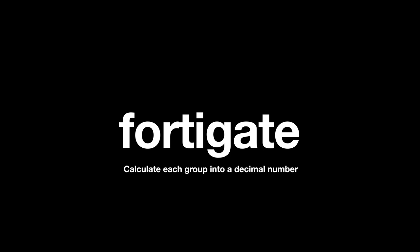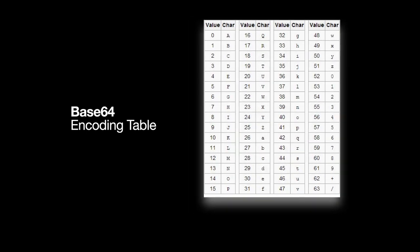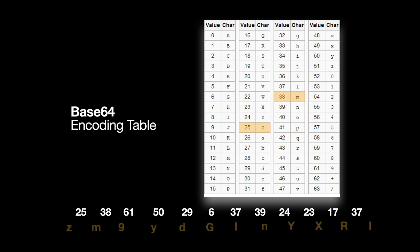Now take each group and convert it into its own decimal number. So if that's our six-digit group, that's their decimal value. The first group is actually 25, converting it into its own decimal value. The second group is 38, and so on. Now take the Base64 encoding table, which you can find just about everywhere, and each decimal value has its own representation in Base64. So 25 is actually Z, 38 is actually M. Converting that, you will find out that the word F8 is encoded in Base64.